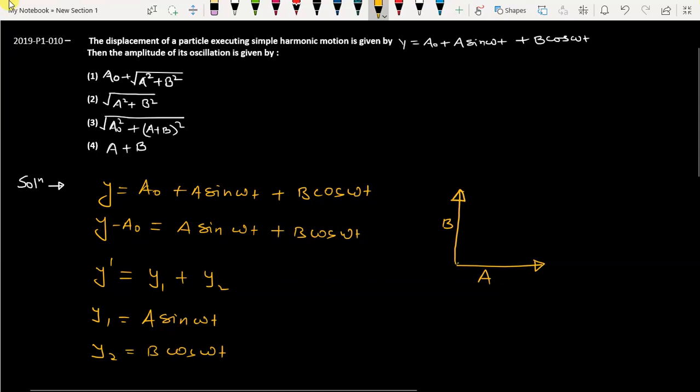So we know that this is going to be the resultant, and since y₁ and y₂ are perpendicular to each other, it can be a² plus b². So resultant amplitude of these two waves is going to be the square root of a² plus b².